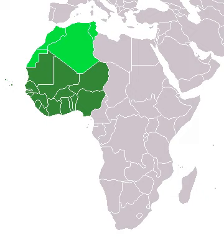Traditional African religions — noting the many different belief systems — are the oldest belief systems among the populations of this region, and include Akan religion, Yoruba religion, Odinani, and Serer religion. They are spiritual but also linked to the historical and cultural heritage of the people. Although traditional beliefs vary from one place to the next, there are more similarities than differences.